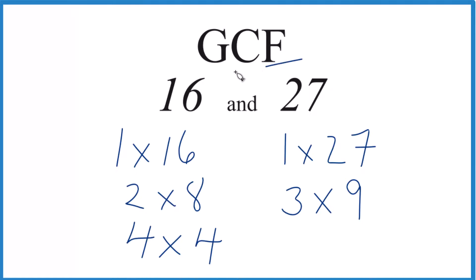So we have the factors, let's look at the common factors and then choose the greatest. 1 goes into 16 and 27 evenly, and that looks like it. There's no other common factors, so the GCF for 16 and 27 is just 1.